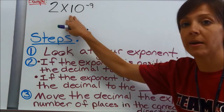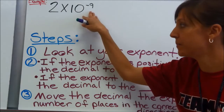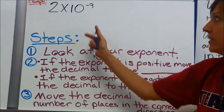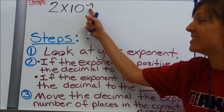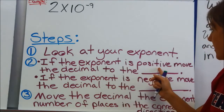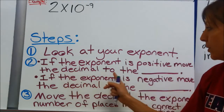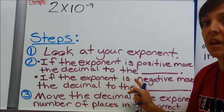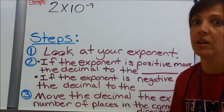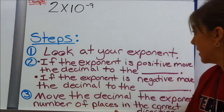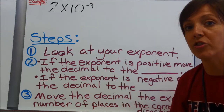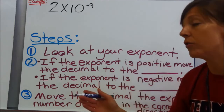Here we have 2 times 10 to the negative 9th. Our steps: first, look at your exponent. This is a 9 — it's a negative 9. If the exponent is positive, positive numbers on the number line are on the right side of the number line, so if your exponent is positive, you're going to move your decimal to the right.